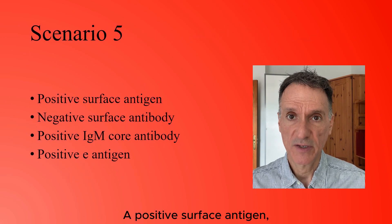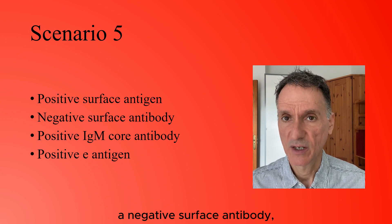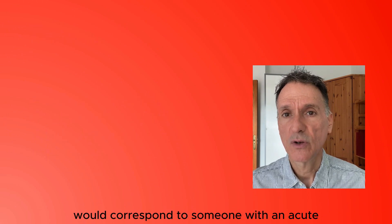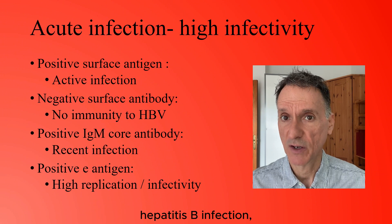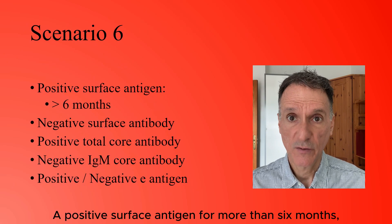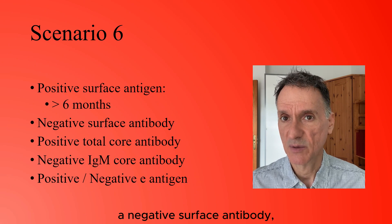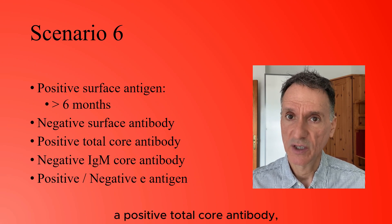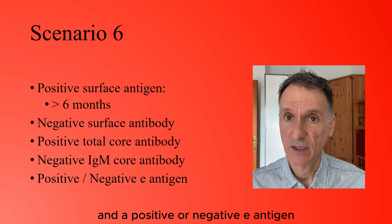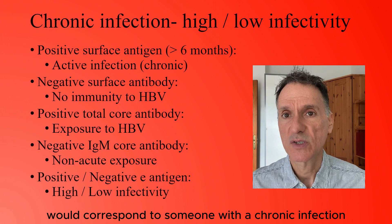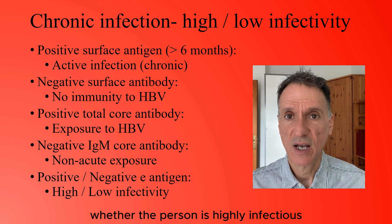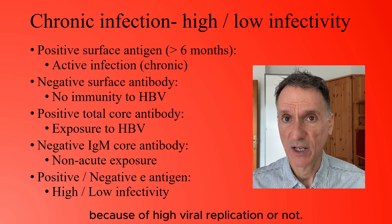A positive surface antigen, negative surface antibody, positive IgM core antibodies, and positive E antigen corresponds to someone with an acute hepatitis B infection with high levels of viral replication and infectivity. A positive surface antigen, positive total core antibody, negative IgM core antibody, and positive or negative E antigen corresponds to someone with a chronic infection, with the E antigen simply determining whether the person is highly infectious due to high viral replication or not.